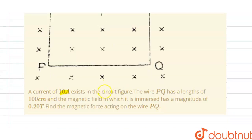A current of 10 ampere exists in the circuit figure. The wire PQ has a length of 100 centimeter and the magnetic field in which it is immersed has a magnitude of 0.20 tesla. Find the magnetic force acting on the wire PQ.